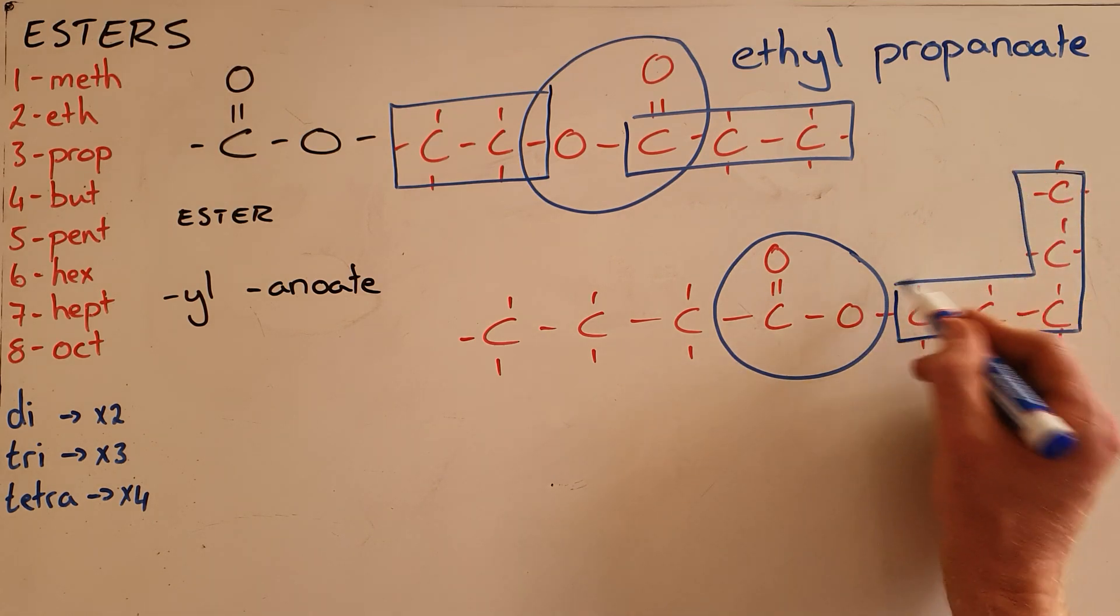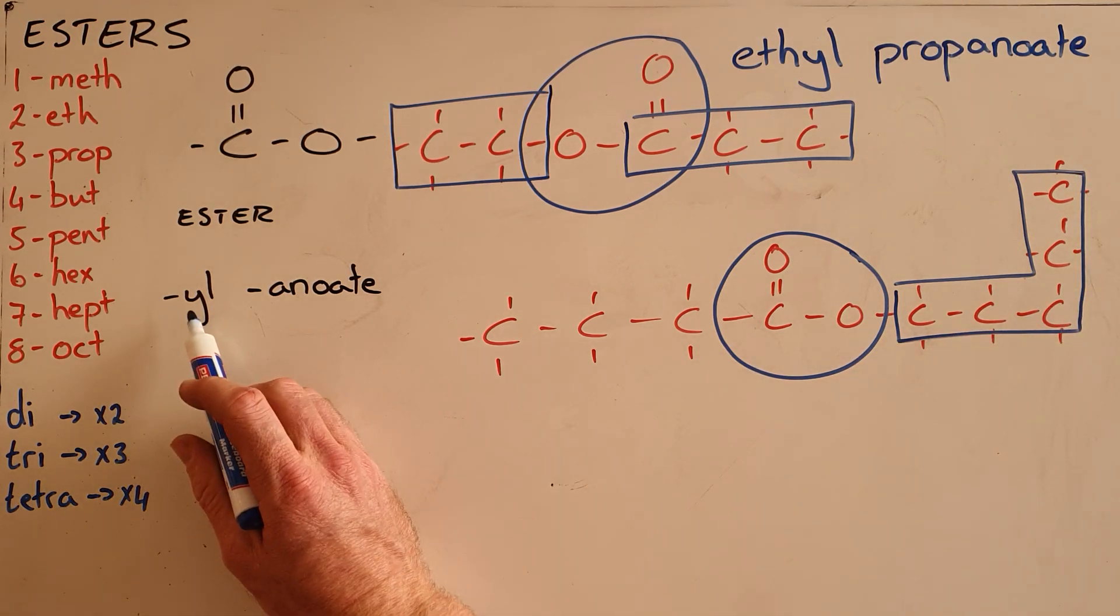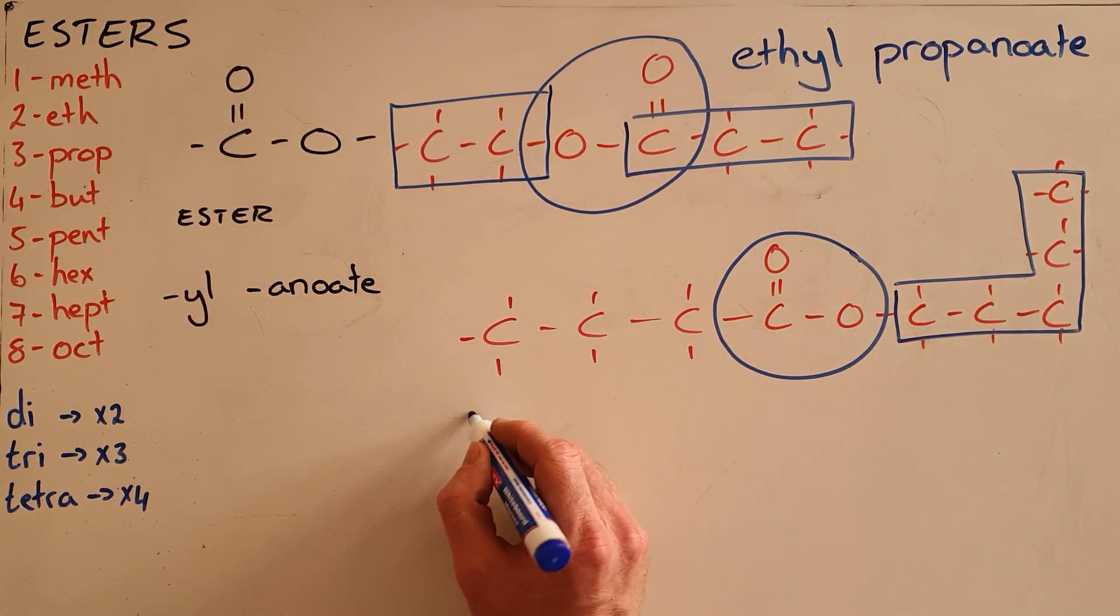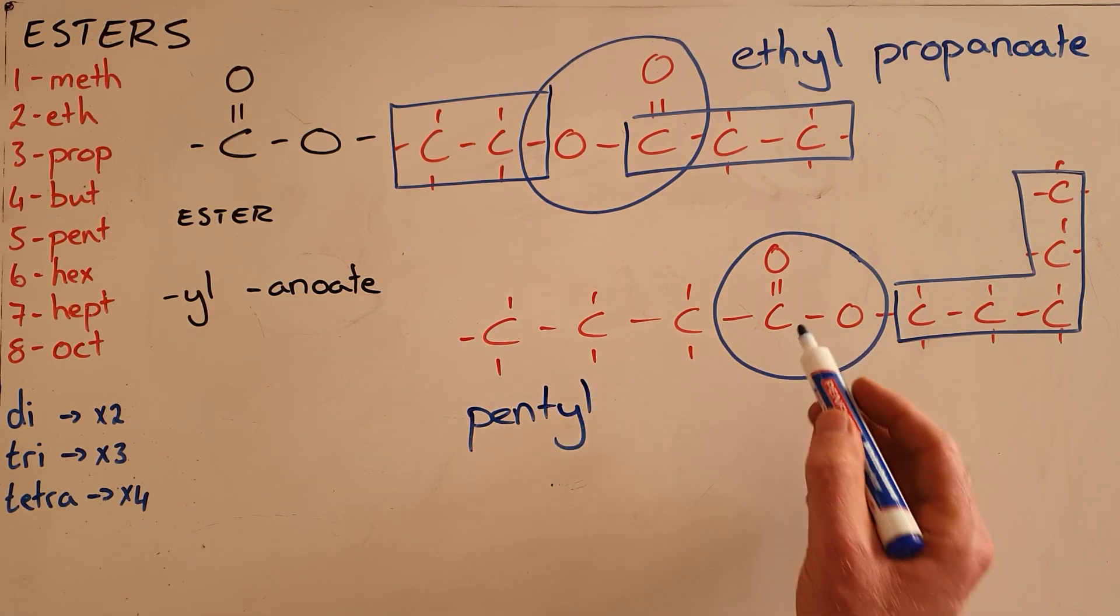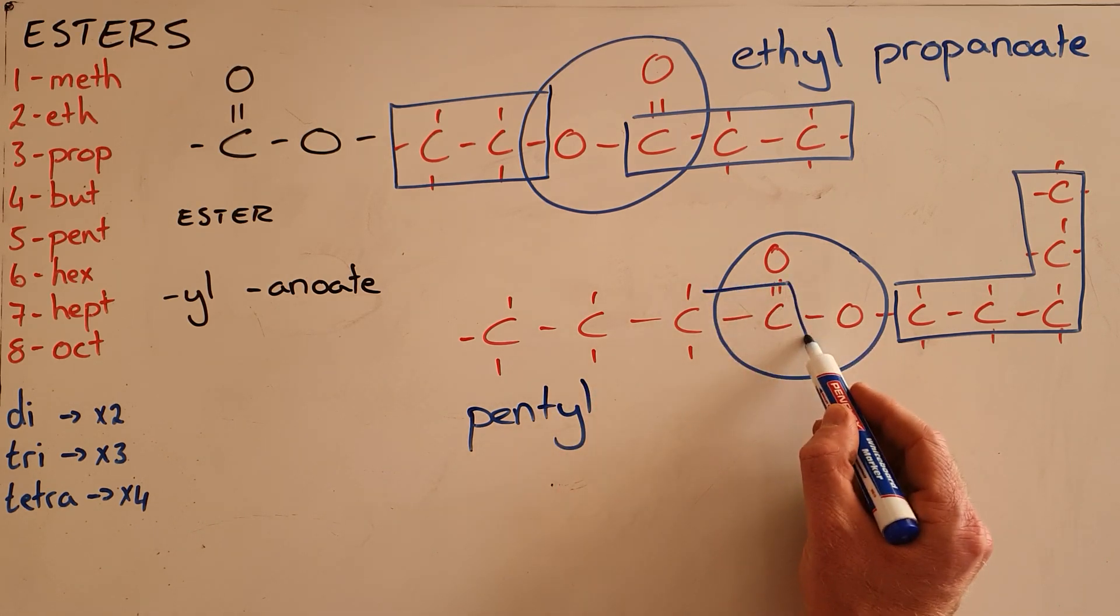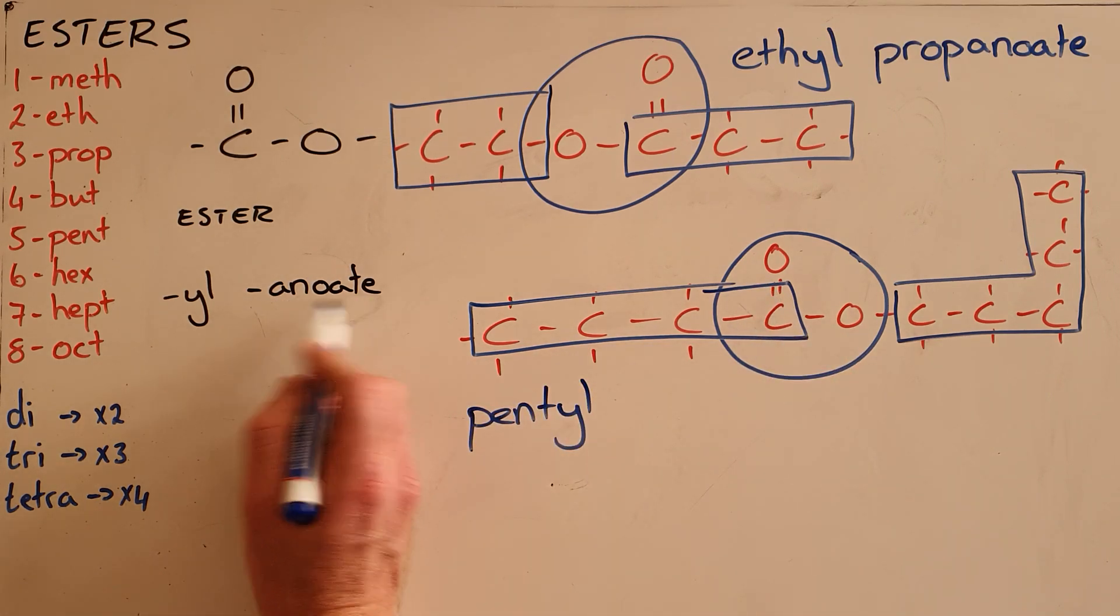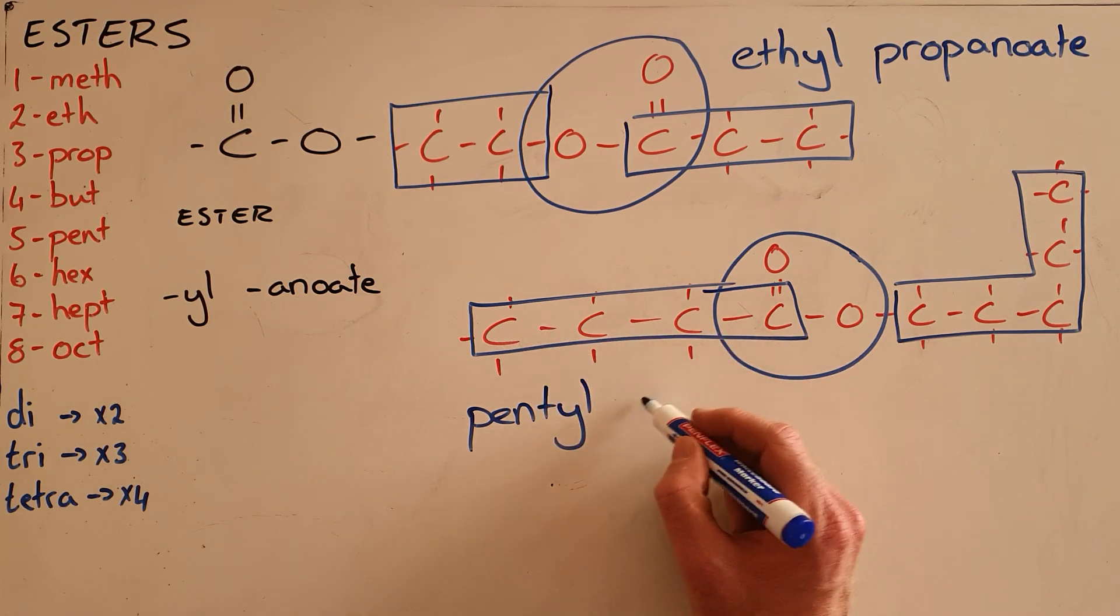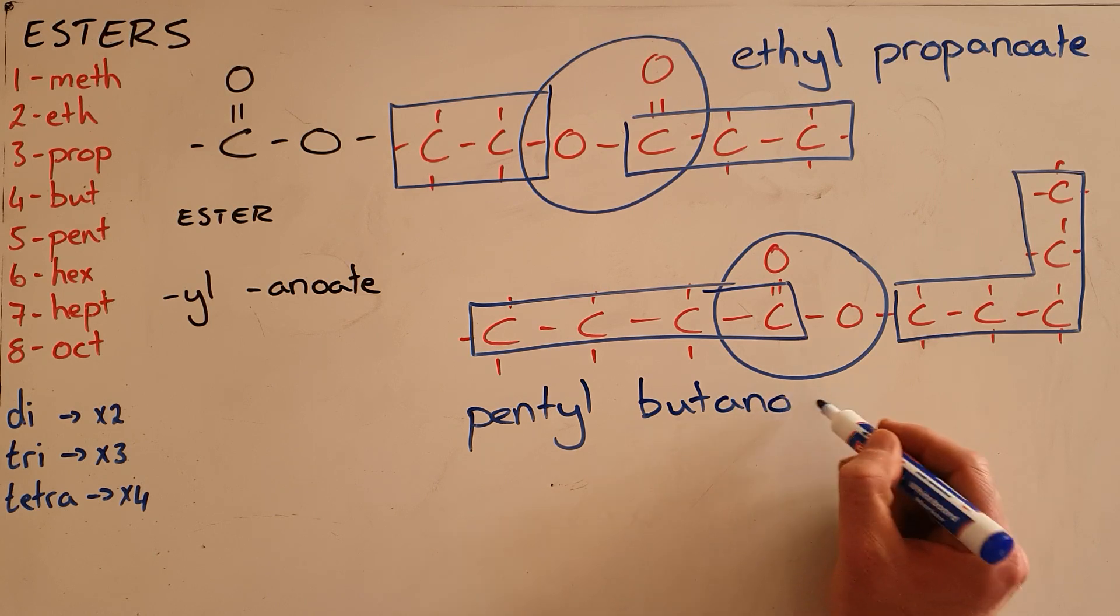In this case, we can see that is a five carbon chain, which means that the part that gets the suffix YL is meth-eth-prop-but-pent, so we would call this pentyl. Then the part of this compound that is attached to the double bonded oxygen is always the main part and gets the suffix OATE: meth-eth-prop-but, so this would be correctly called pentyl butanoate.